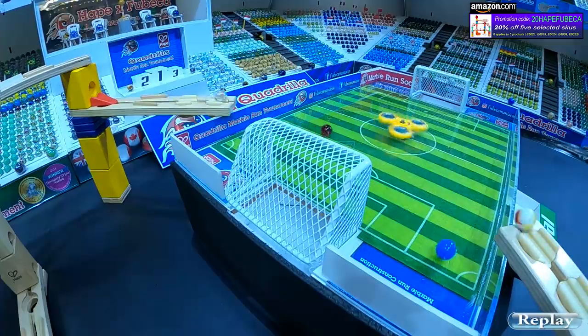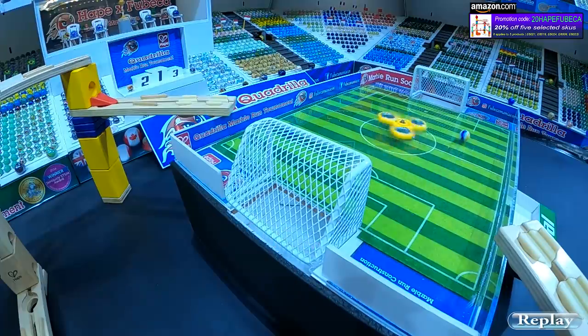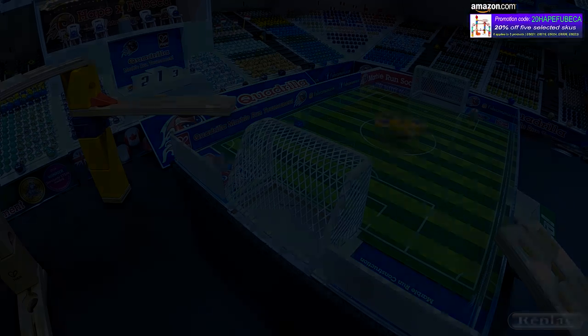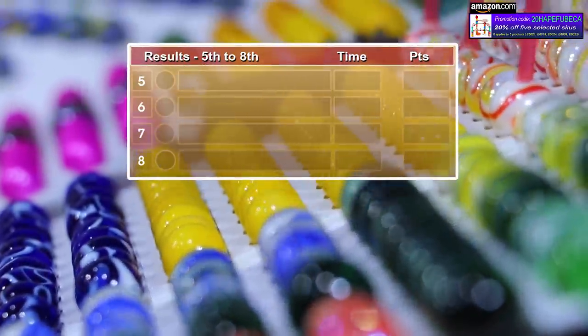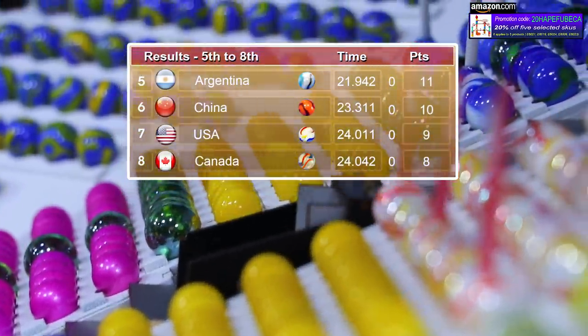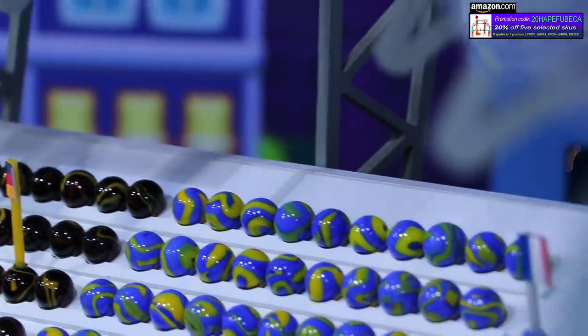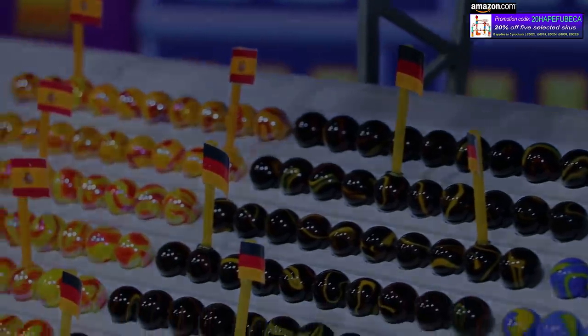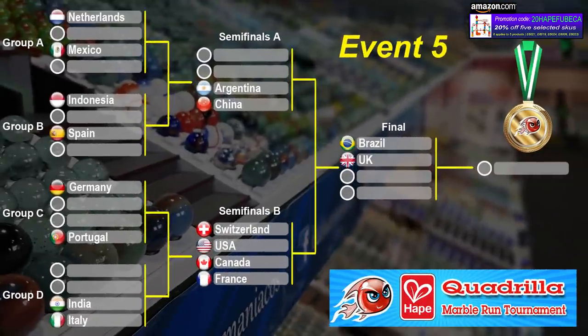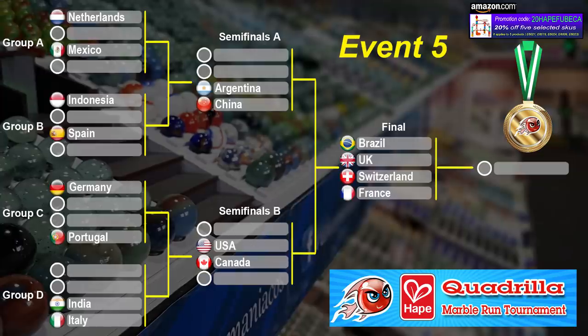So France gets down first. That advances them into the final. The only goal with an assist from France goes to Switzerland. France got an assist from Canada in the previous run to score their goal. Now they help out their opponent there. There are the results. Fifth through eighth. Argentina takes fifth. China, the United States, and Canada rounding out that group who was eliminated in the semifinals.